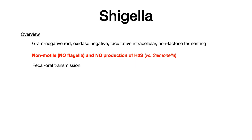Shigella is a gram-negative rod that's oxidase negative, facultative intracellular, and non-lactose fermenting. It is non-motile because it has no flagella. It also has no production of H2S, and both of these features differentiate it from Salmonella, which does have flagella and does produce H2S.